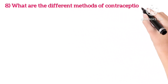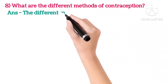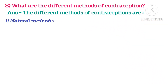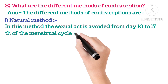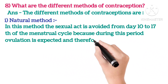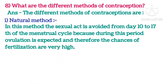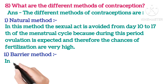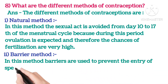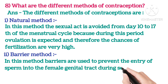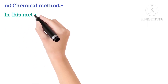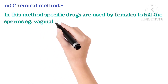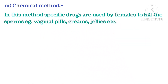Eighth: What are the different methods of contraception? First, natural method — the sexual act is avoided from day 10 to 17 of the menstrual cycle, because during this period ovulation is expected and chances of fertilization are very high. Second, barrier method — barriers are used to prevent entry of sperm into the female genital tract, for example: condom, diaphragm, cervical caps, etc. Third, chemical method — specific drugs are used by females to kill the sperm, for example: vaginal pills, creams, jellies, etc.